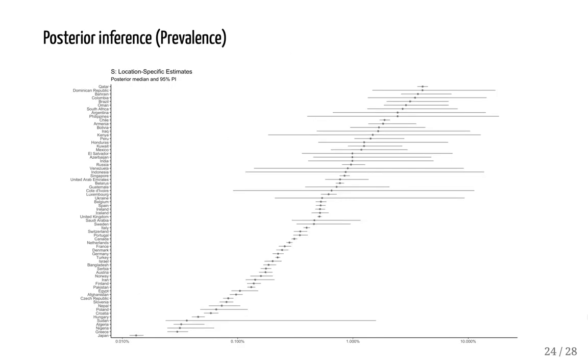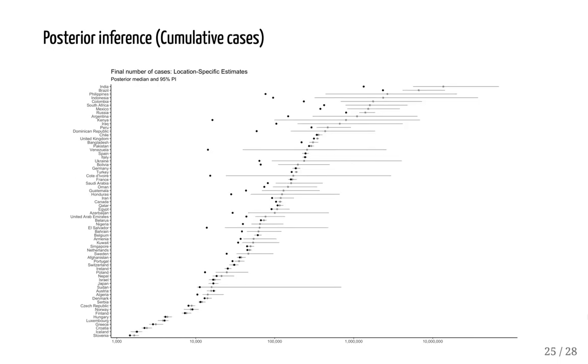We also have the country-specific S parameter or the percent of a population that will become diagnosed. We can just as well multiply that by the country's population and see the number of people who will be diagnosed, not the percent. Here we have that the black dots are the current situation and the gray dots and lines are posterior medians and 95 percent posterior intervals.